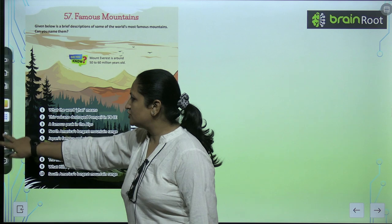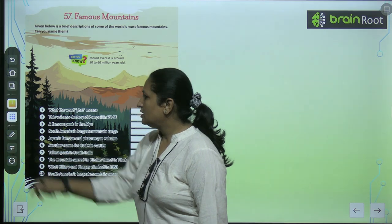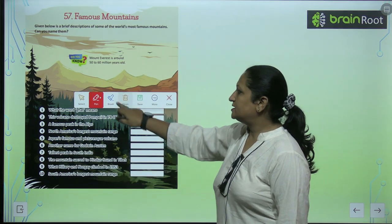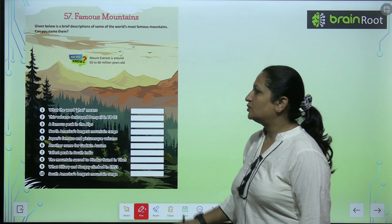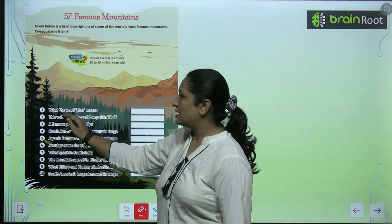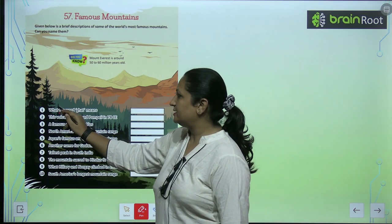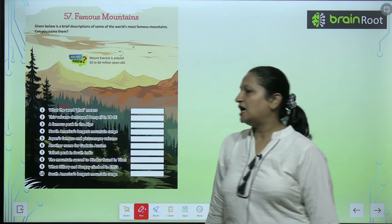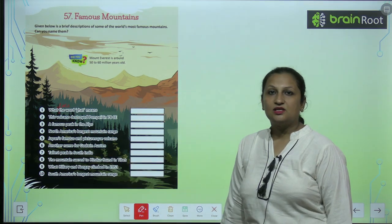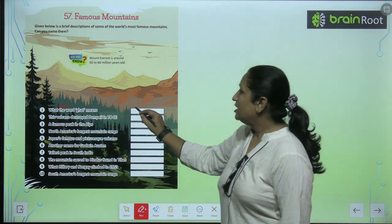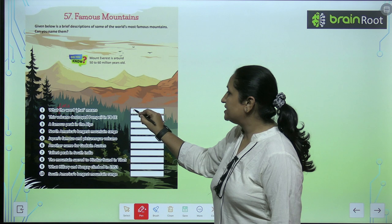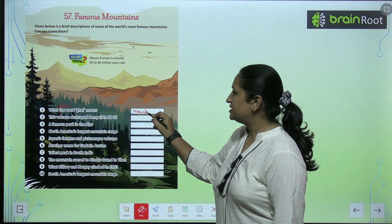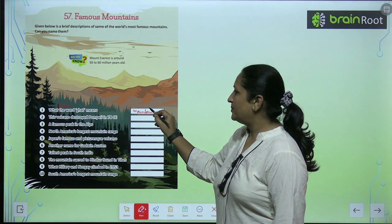See the first question, children. The first question says: what does the word 'ghaat' mean? So here we have to fill in 'does.' Ghaat ka matlab hota hai mountain pass — mountain pass.